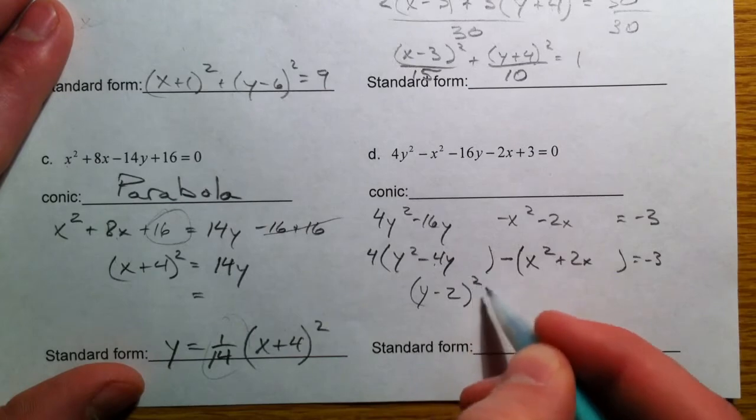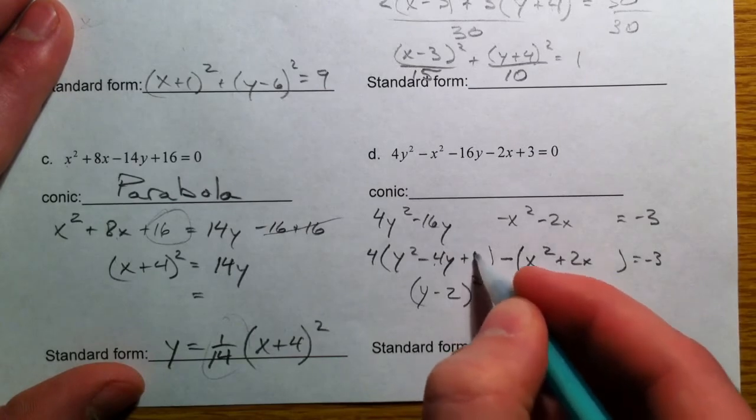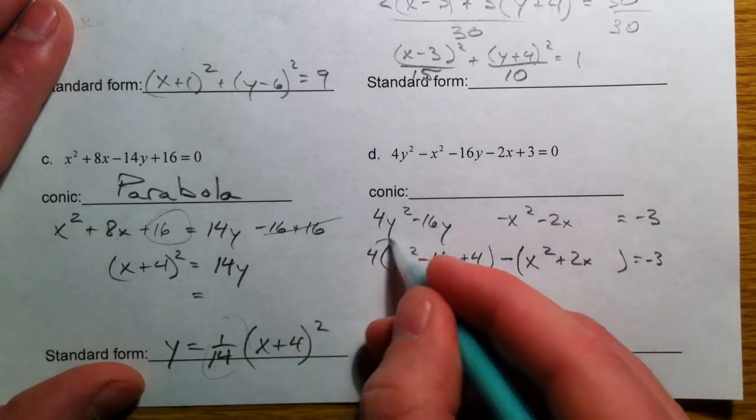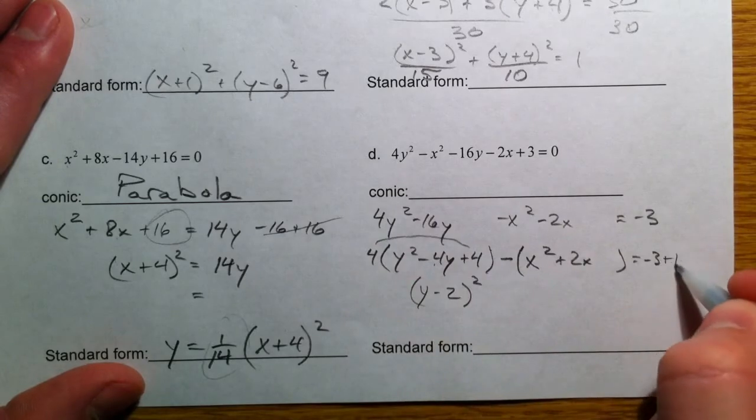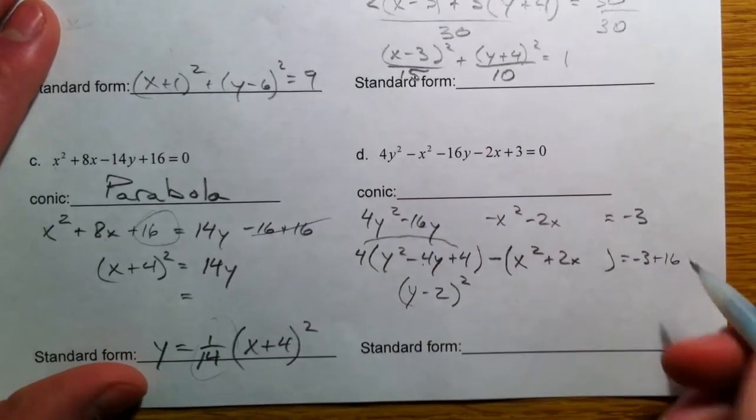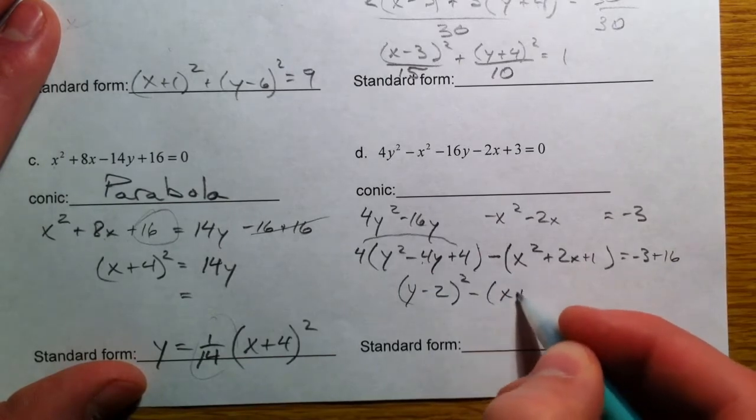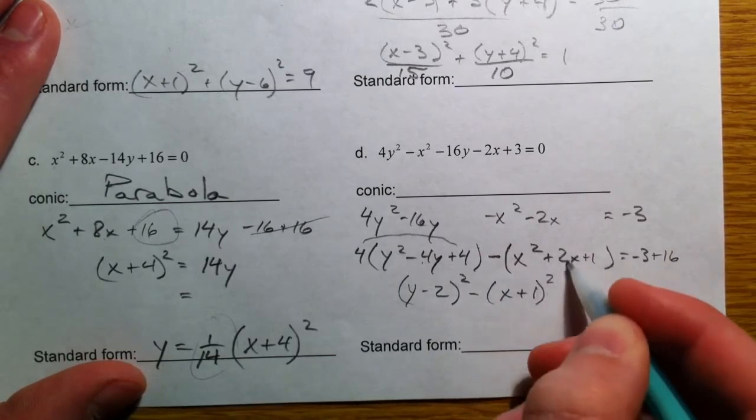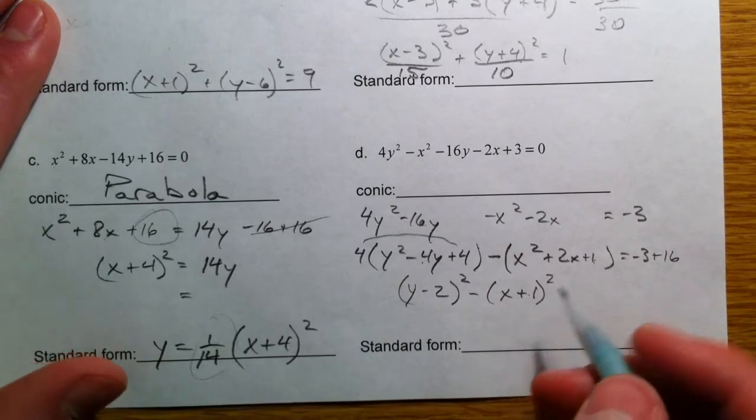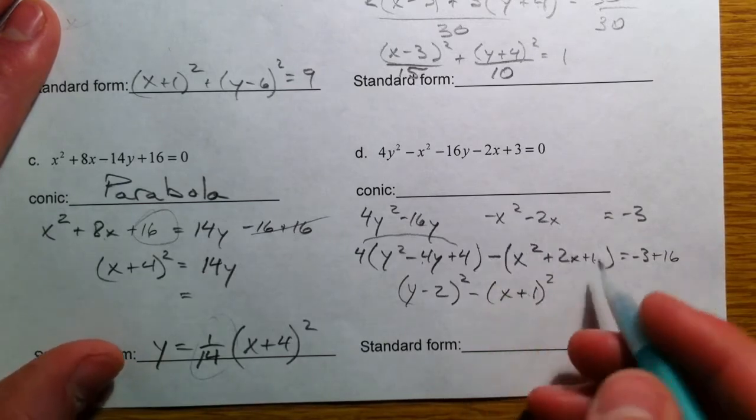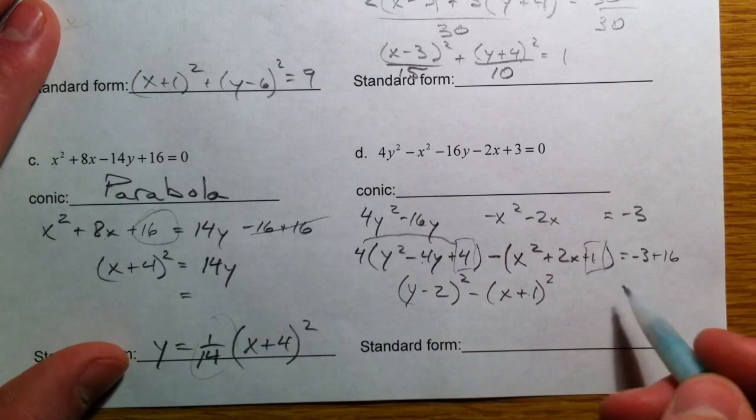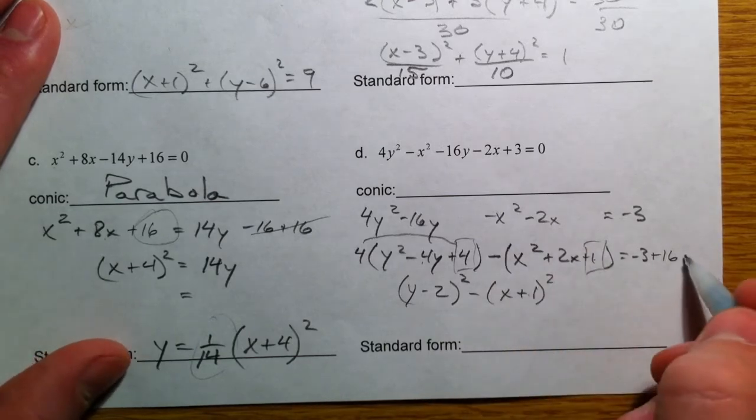y minus 2 squared. Add the 4. And that's really adding 16. x plus 1 squared. Half of 2 is 1, 1 times 1. But we're not really adding 1 here.